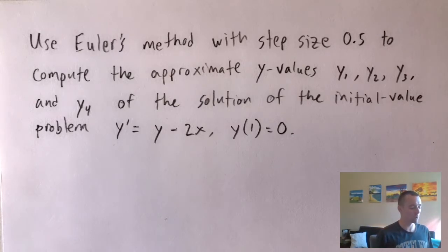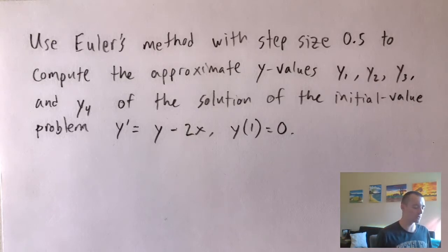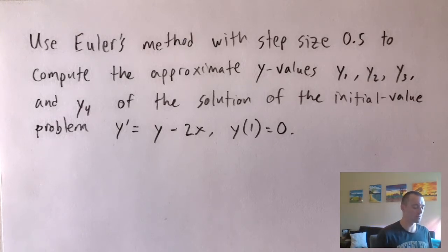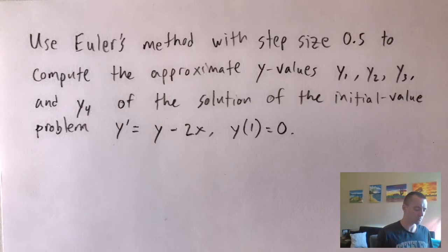We're going to use Euler's method with a step size of 0.5 to compute the approximate y values y₁, y₂, y₃, and y₄ of the solution of the initial value problem y′ = y − 2x, where we know y(1) = 0. There's a lot to break down in this problem.